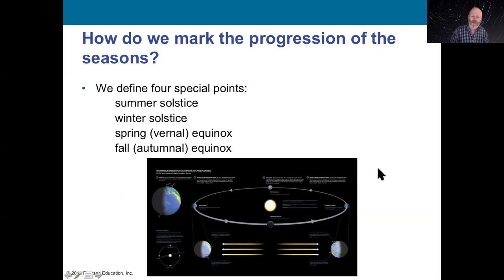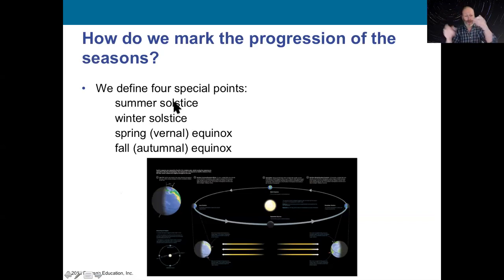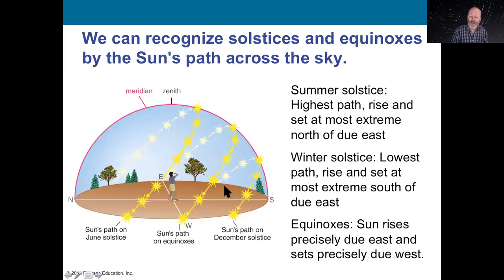Key things to remember: summer solstice is the longest day of the year, with the sun highest in the sky. Winter solstice is the shortest day, with the sun lowest. Remember 'sol' for sun. These are opposite depending on whether you're in the northern or southern hemisphere. Equinox means equal night — 12 hours of day and night everywhere. Those are in spring and fall, halfway between the solstices. You can go out in Indiana in summer and notice the sun is higher in the sky than in winter.